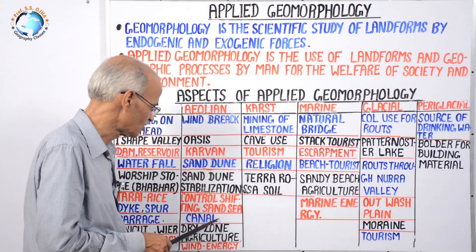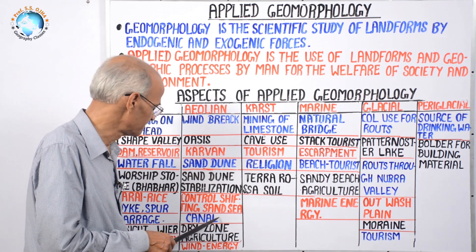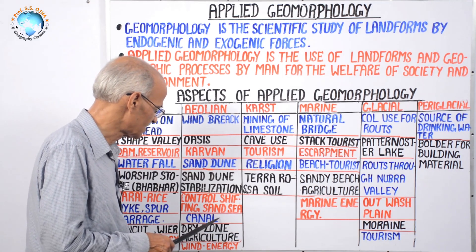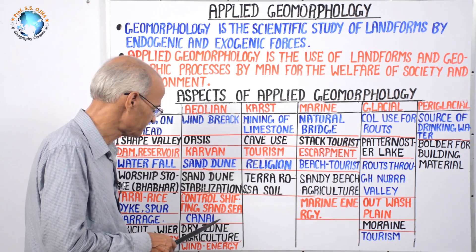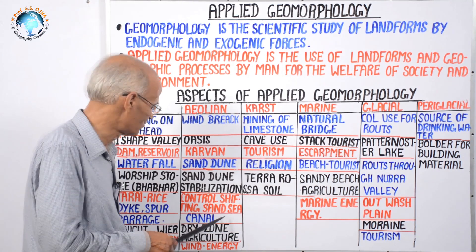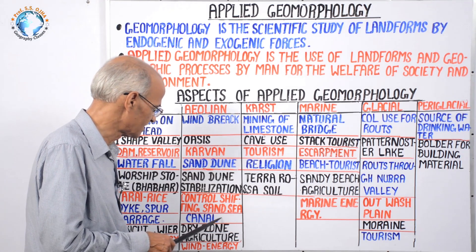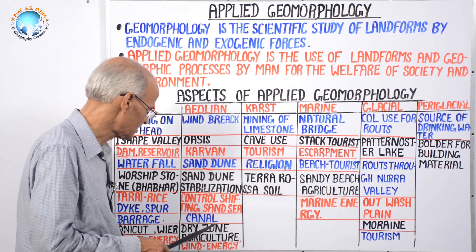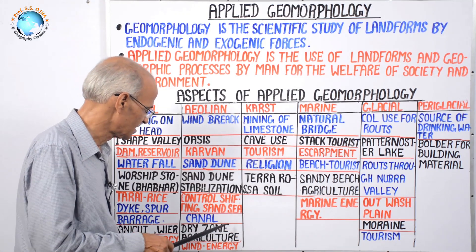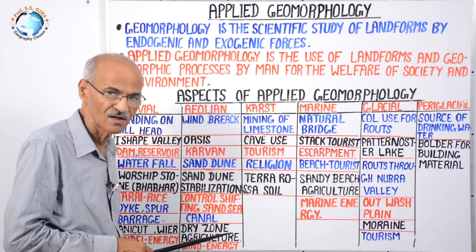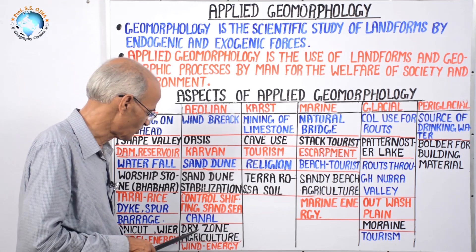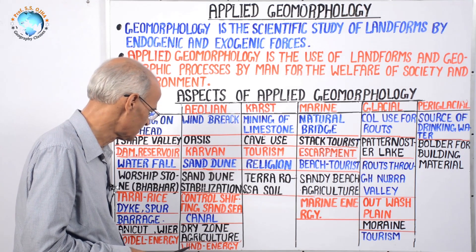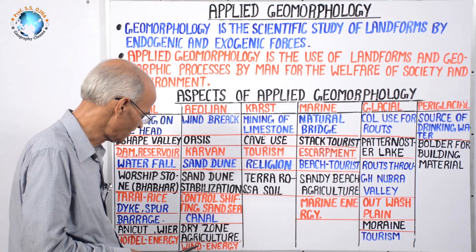Next is canal network. In arid and semi-arid regions, canals and their distributaries are extended. For example, in Rajasthan, the Indira Canal and its sub-branches have proved helpful in stabilizing sand dunes and soil. Dry zone agriculture is also practiced in arid and semi-arid regions, with coarse grain crops produced using drip and sprinkling irrigation.